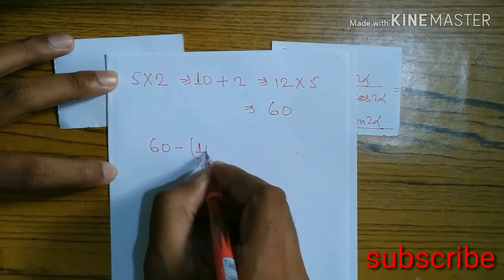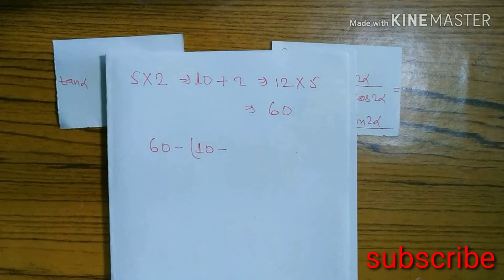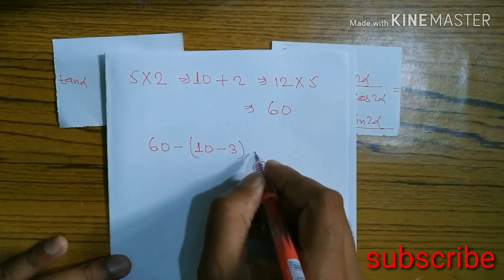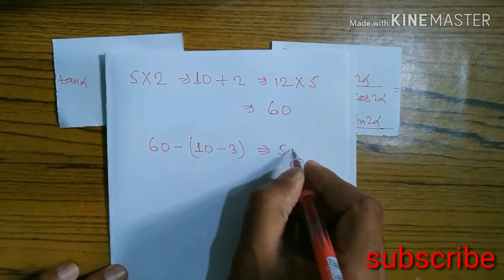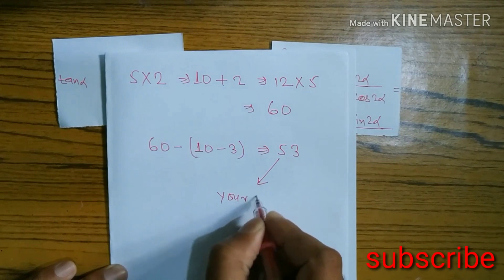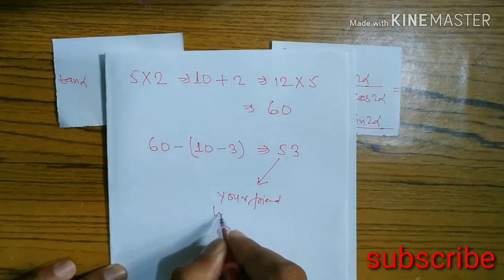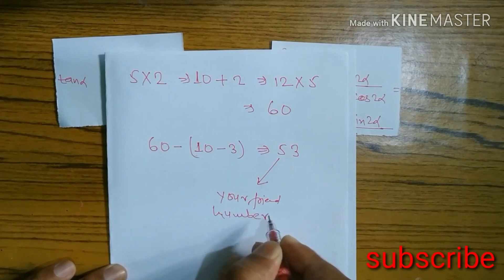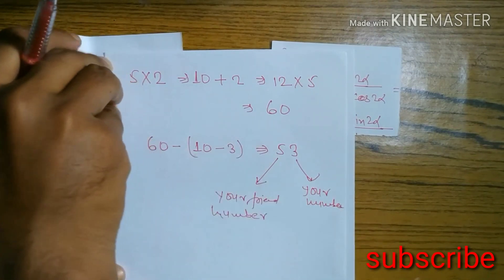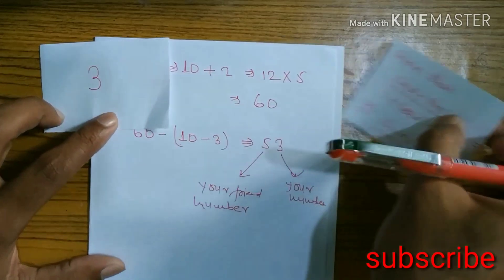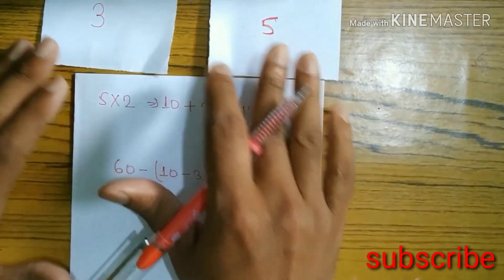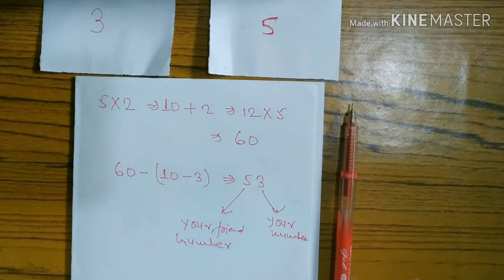Finally, tell them to subtract: 60 minus 10 minus your number — the number you wrote, not their number. For example, if you wrote 3 and we got 53, the 5 means your friend's number and the 3 means your number. It's just math magic! Thanks for watching my video, and before going please subscribe. Thank you!